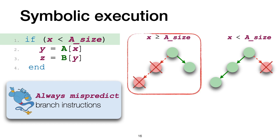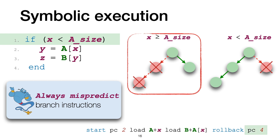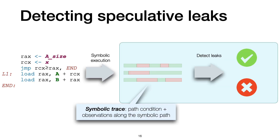For instance, if x is out of bound, we get the following trace. There are two important points here. First, the green observations are the only ones produced according to the non-speculative semantics, while the red observations are the additional observations produced by the speculative semantics. Second, some of these observations, such as those associated with the memory accesses, are symbolic.